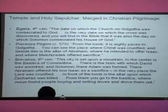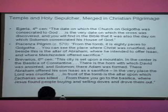In the 6th century it gets even more interesting. A pilgrim writes: 'From the tomb — Christ's tomb — it is 80 paces to Golgotha, where he was crucified. And beside this is the altar of Abraham, where he intended to offer Isaac. Not only that, it's also where Melchizedek offered sacrifice.' Everything's rolling in. It's like a big magnet sucking it all to itself.